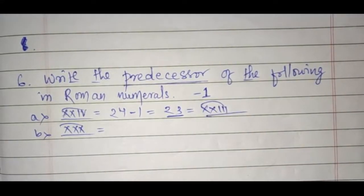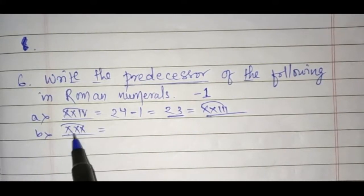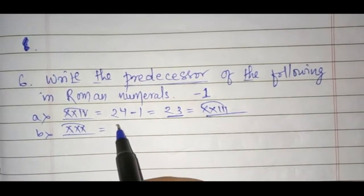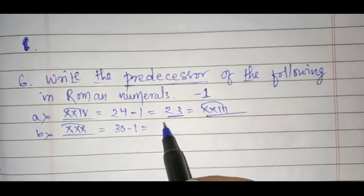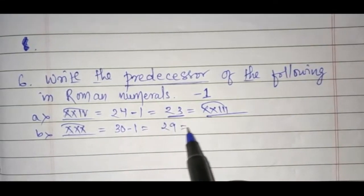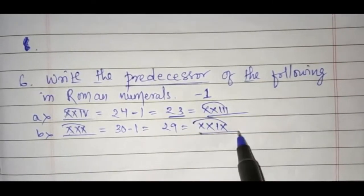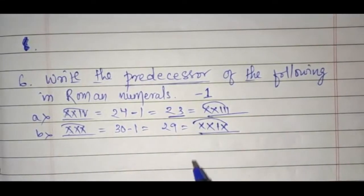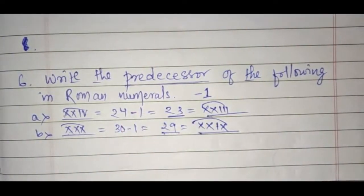Similarly, if you have to write the predecessor of XXX, XXX means 30. So 30 minus 1 is 29. And 29 will be represented as XXIX. So that is your 29. With this, we are over with question number 6.